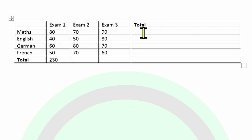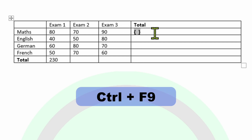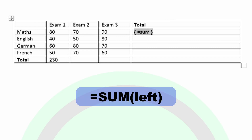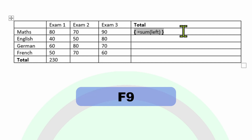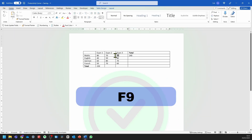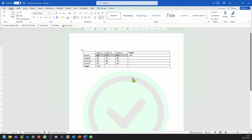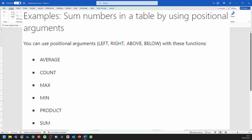We can do the same thing in the rows. So we're going to press Control F9 — it should open up these brackets. Now we're going to type in equal to sum, open brackets, and because these values are to the left of the formula, we're going to simply type in the text 'left'. Now close the brackets and press F9. That's now summed up the three values on the left-hand side. You can do the same thing with averages, counts, max and min as well.